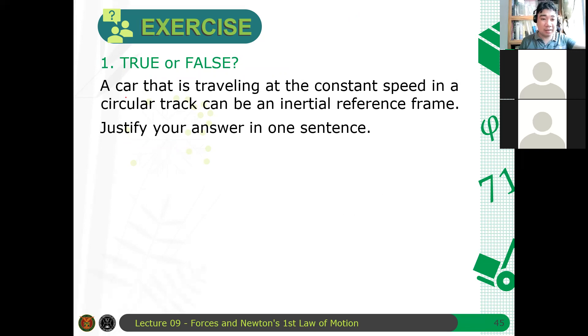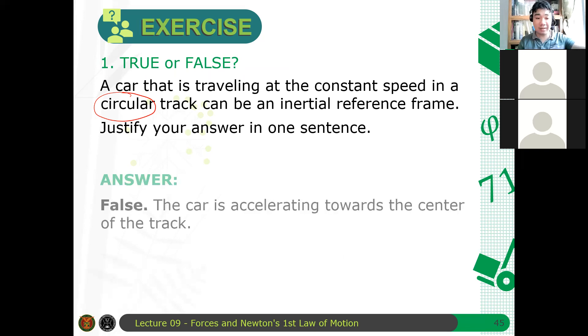Because the circular track here, this means that the object is continuously changing its direction. And therefore, since there's changing direction, there is acceleration, even though the speed is not changing. And hence, it's false.